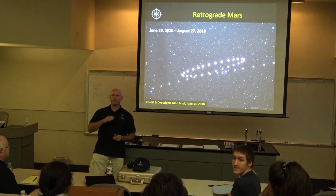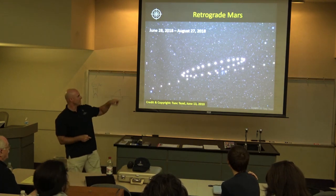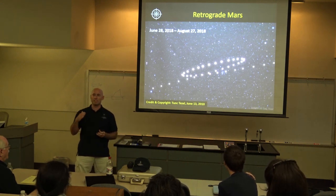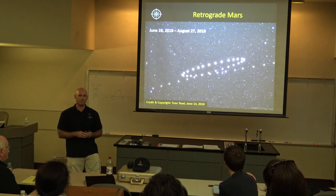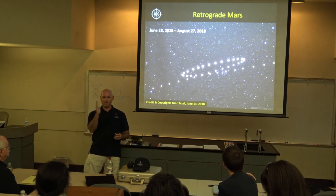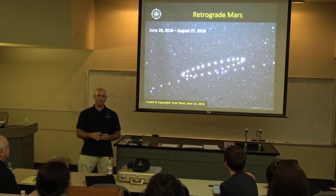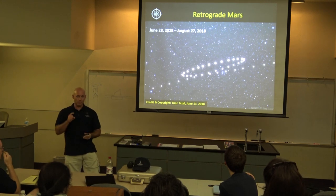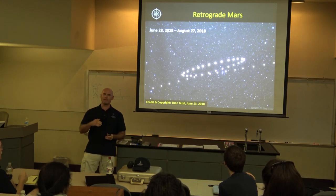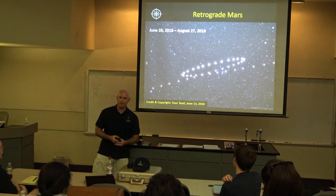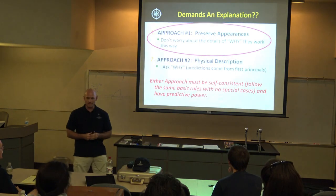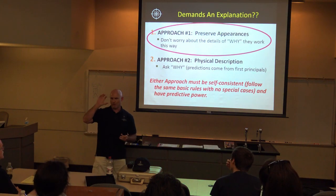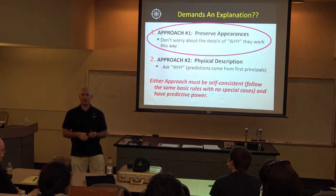Mars just went through opposition and then retrograde motion. You can see here an image by Tunk Tuzel from 2010 showing the path that Mars takes when it reaches opposition and retrograde motion — for a couple of months it goes westward, stops, then goes eastward again. Thousands of years in the past, seeing this pattern in the night sky would literally throw you for a loop, because it's extremely complex and difficult to figure out.